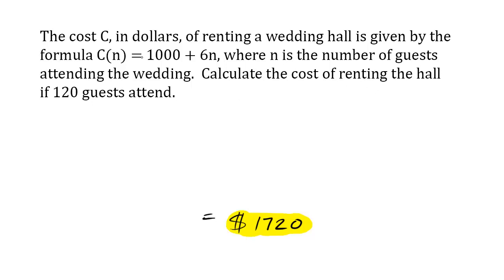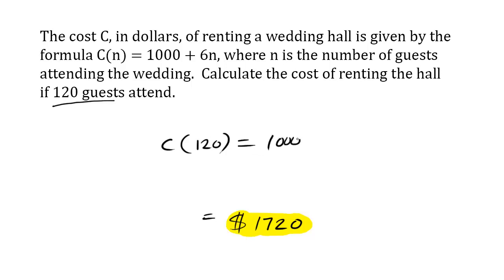This here is function notation. We know there's going to be 120 guests, so that's what N is. So we say C of 120 — that's the N value — is equals to 1000 plus 6N. In this case, N is 120.